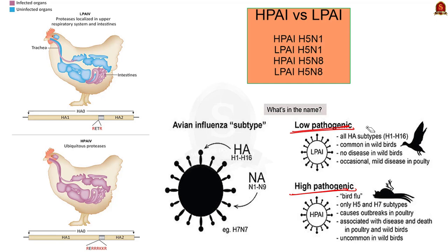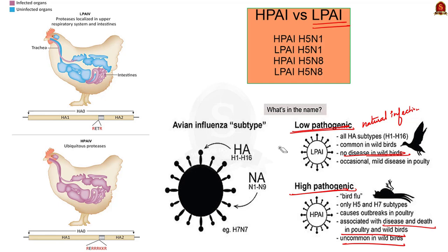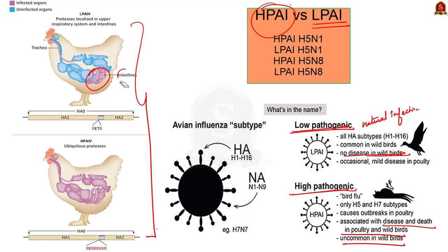LPAI, or low pathogenic avian influenza, is a natural infection of waterfowl that may cause minimal impact or no signs of disease in domestic poultry and wild birds — so LPAI is not a serious threat. HPAI, or highly pathogenic avian influenza, is very serious because it causes severe disease in domestic poultry and is associated with a high death rate, though HPAI is rarely found in waterfowl. An image here shows that in LPAI infection is restricted to the intestine only, while in HPAI the infected region covers almost the whole bird, illustrating the difference in severity.